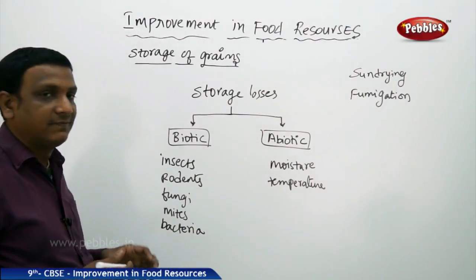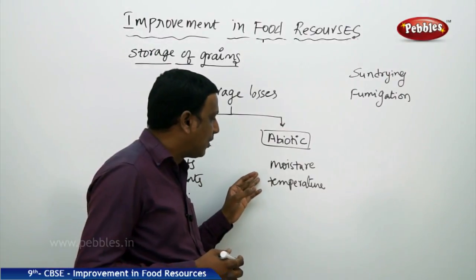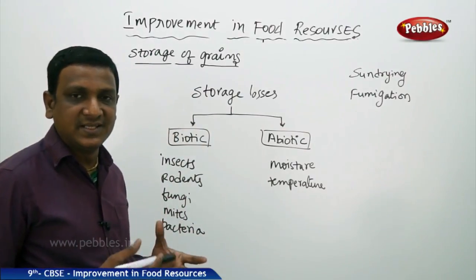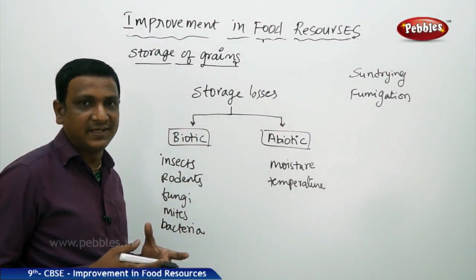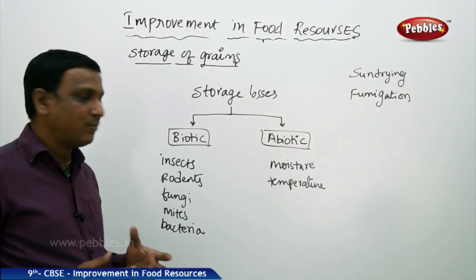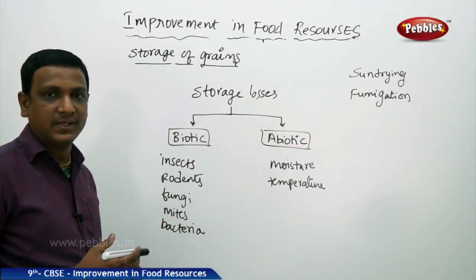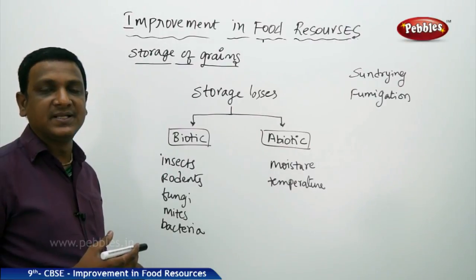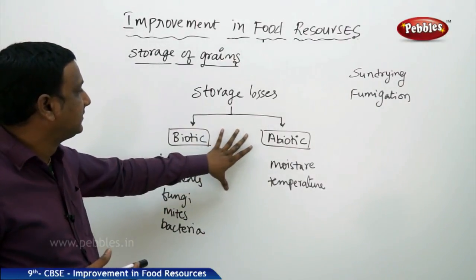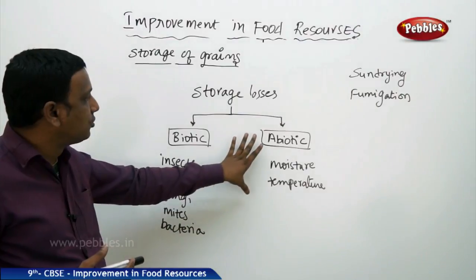The abiotic factors are moisture and temperature. If there is any moisture or water mixed with the grains, there are more chances for bacteria and fungi to grow. Temperature is the other abiotic factor. These are the different factors which need to be managed or controlled, otherwise there will be storage loss.